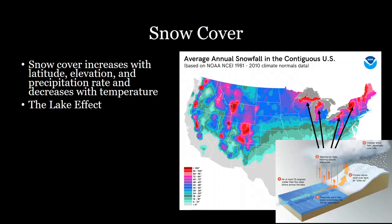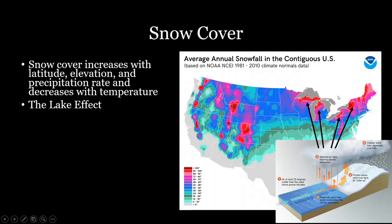Moisture from the Great Lakes evaporates, goes into the atmosphere, and then gets snowed out as it moves over land through orographic lifting. Generally around large water bodies in colder latitudes, you tend to have a lot of precipitation — and in this case, a lot of snowfall.